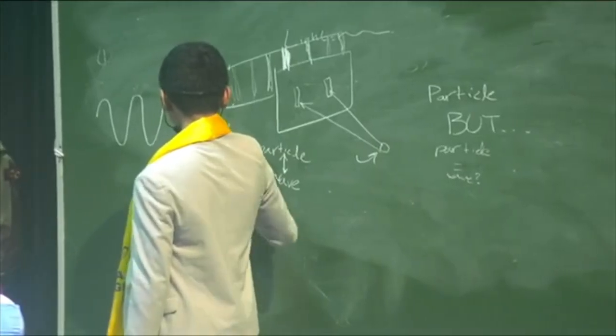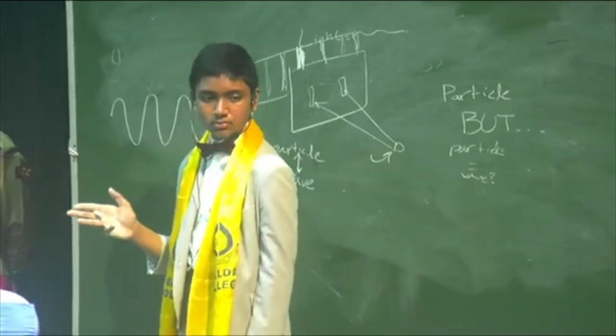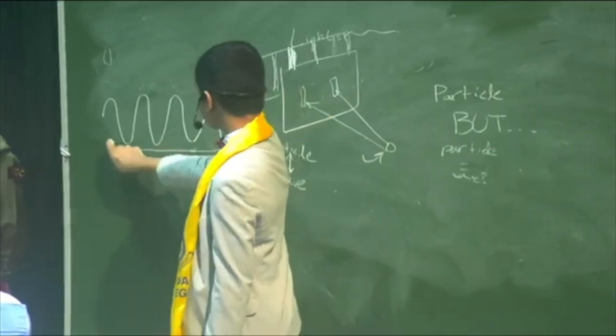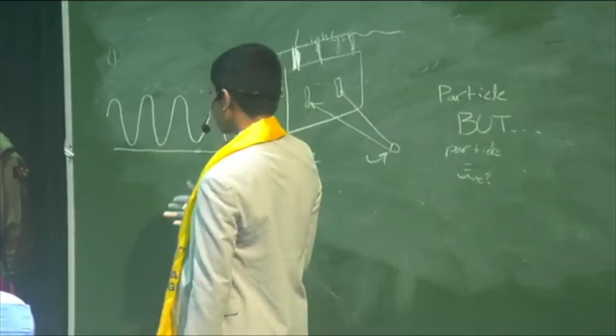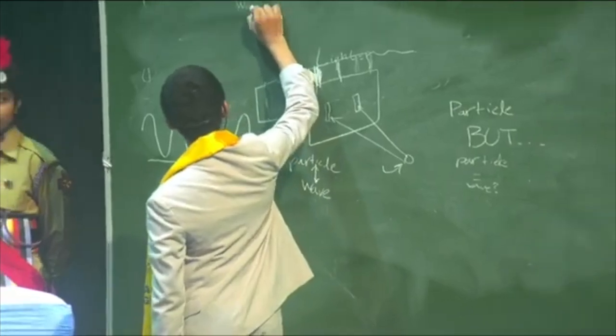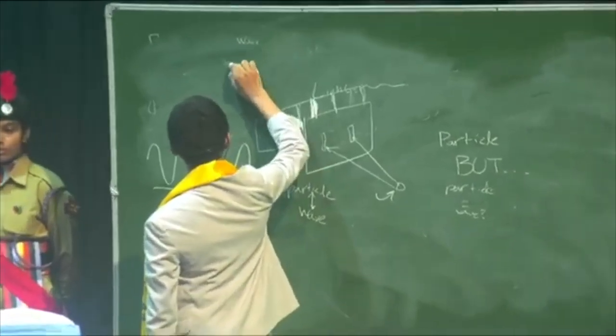And of course, when you zoom in very far, you can see that essentially, on a lower level, every particle kind of is a wave. So in some sense, you can say everything is a wave, but some waves are more wavy than others. It's a very strange question that people have been exploring for the past 100 years.